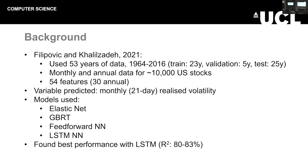The original paper I based my project on was Filipovich and Kalizadeh in 2021. They used a gigantic dataset of 53 years from 1964, with monthly frequency data and some features calculated on an annual basis — 54 features in total. They were predicting monthly volatility using elastic net, gradient-boosted regression tree models, feed-forward neural network, and an LSTM. They found the best performance in LSTM with an R-squared score of 80 to 83%, while elastic net didn't work very well and GBRT and feed-forward had similar performances.